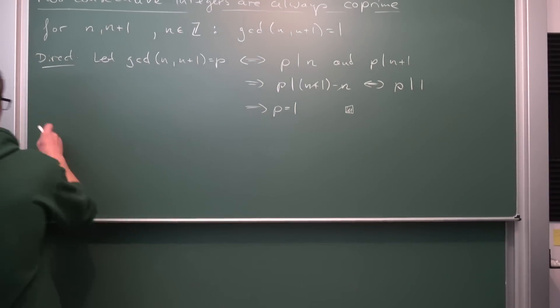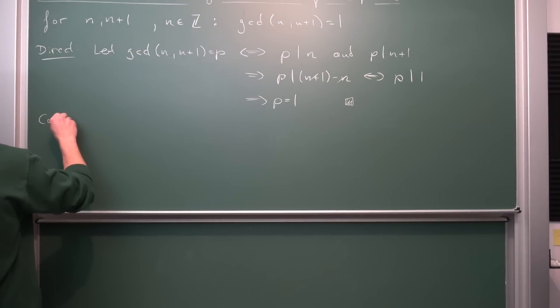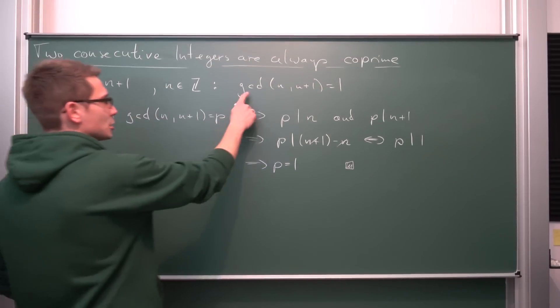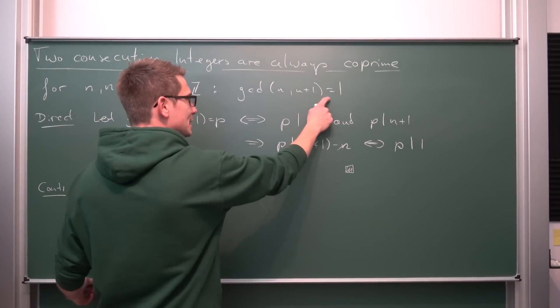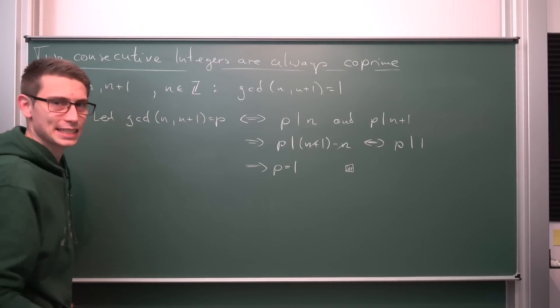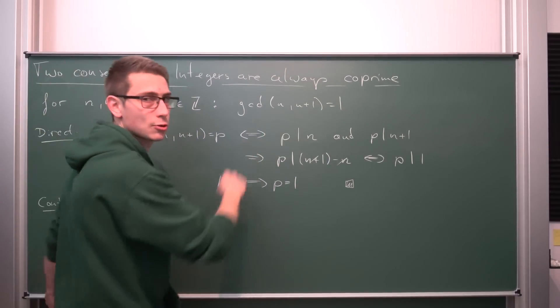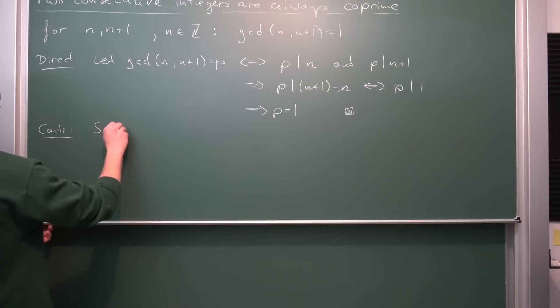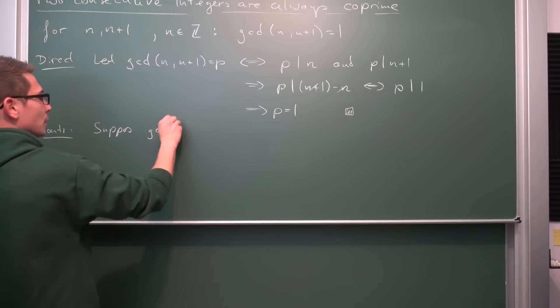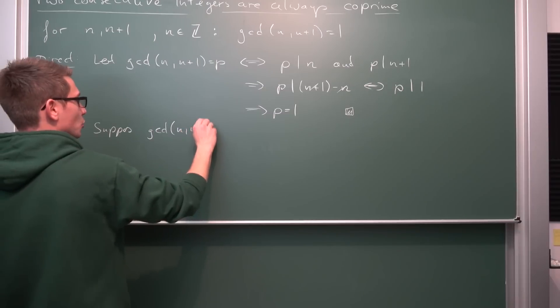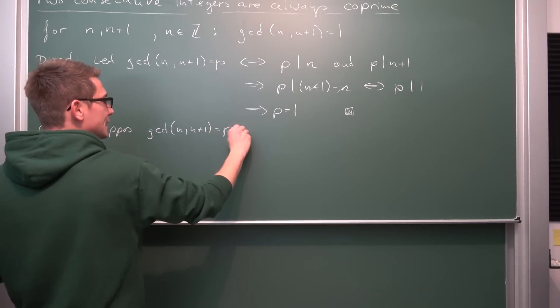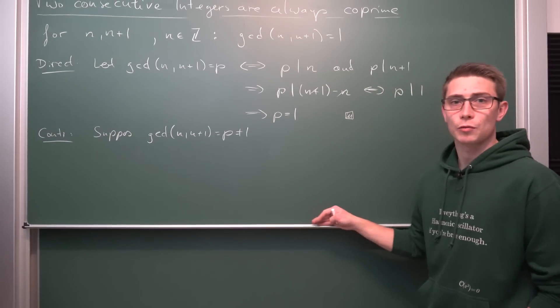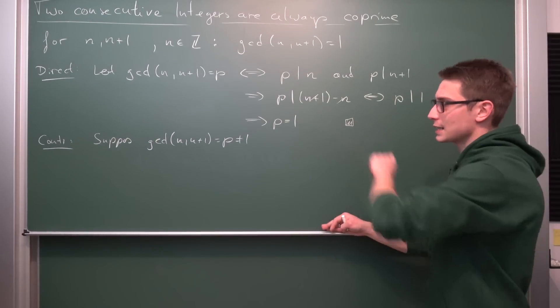I'm going to go into a bit more detail on the steps that we did here in the proof by contradiction. For the proof by contradiction, what we are going to do is we are going to suppose that the GCD of those two numbers is equal to some number p which is not equal to 1. We are going to suppose the contrary of the statement that we have up here. So, suppose that GCD of n and n plus 1 is equal to p where p is not equal to 1. Now, how can we proceed from this point onwards? Well, basically in the same way.